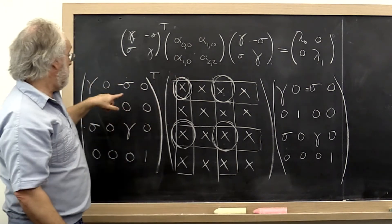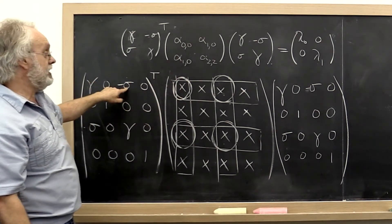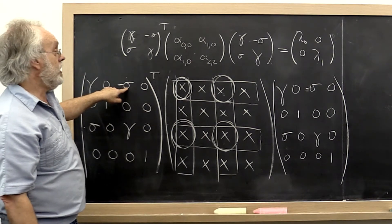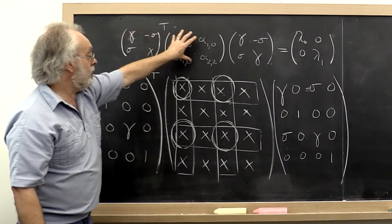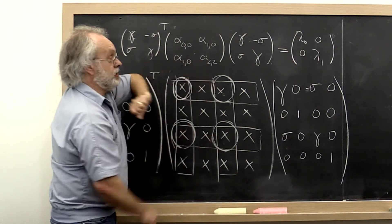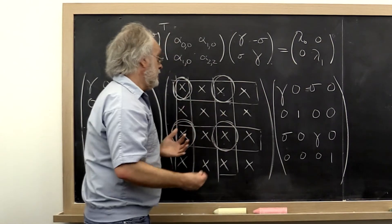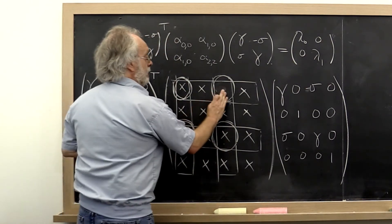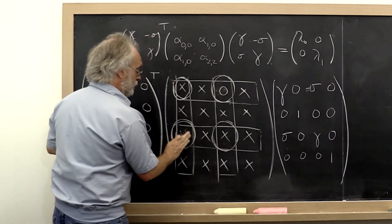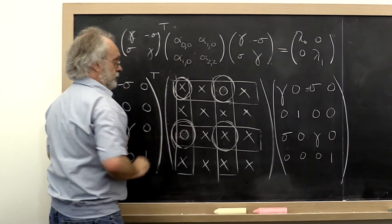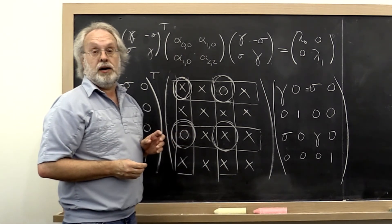if I pick my gamma and my sigma in such a way that when I act on that 2 by 2 matrix, I get a diagonal matrix, I have a means by which I can replace these two off-diagonal values by 0.